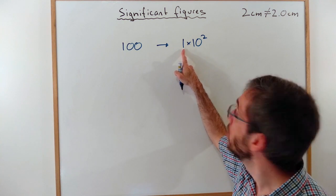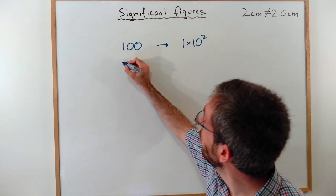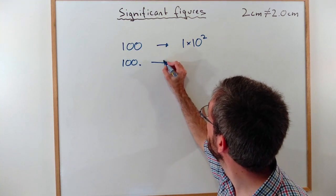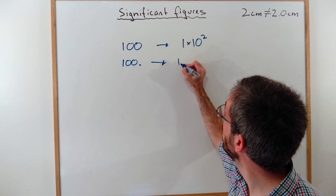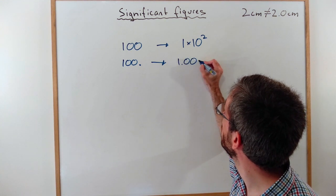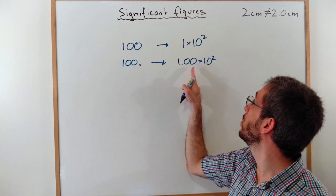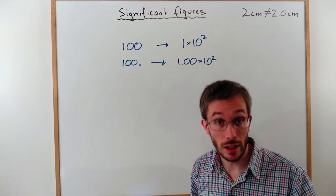If I had 100 points, then that would convert to 1.00 times 10 to the 2. 1, 2, 3 significant figures, giving me 3 significant figures here.